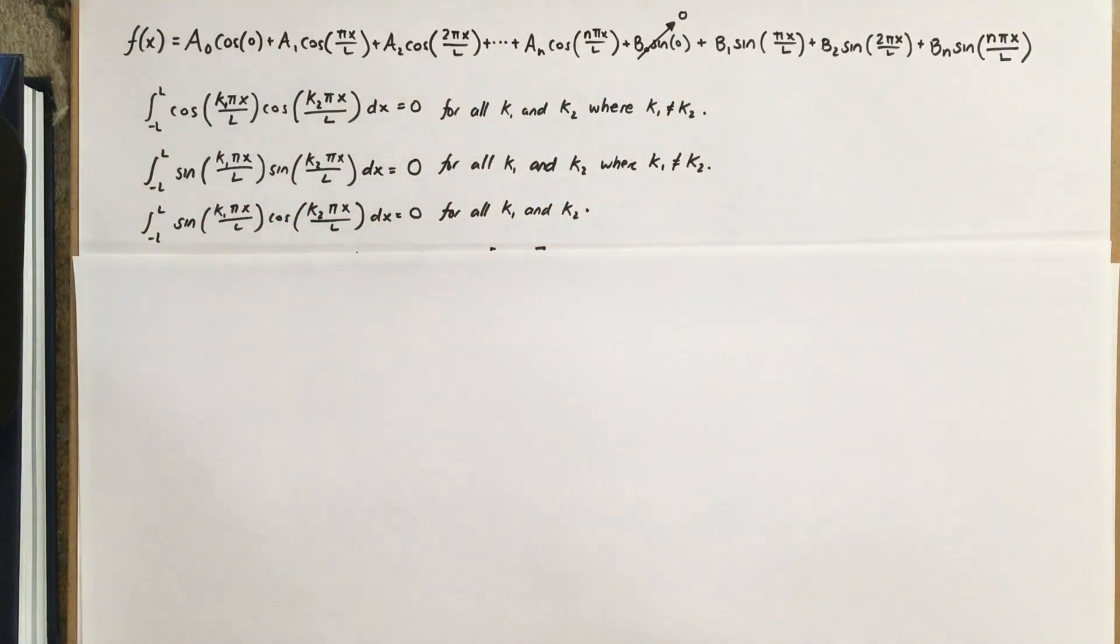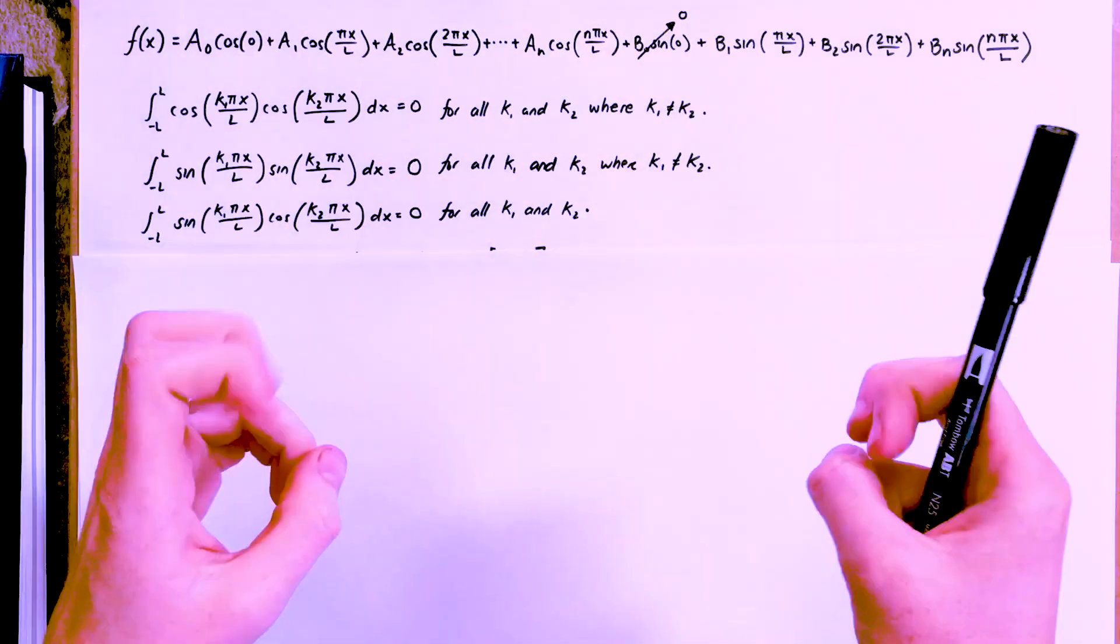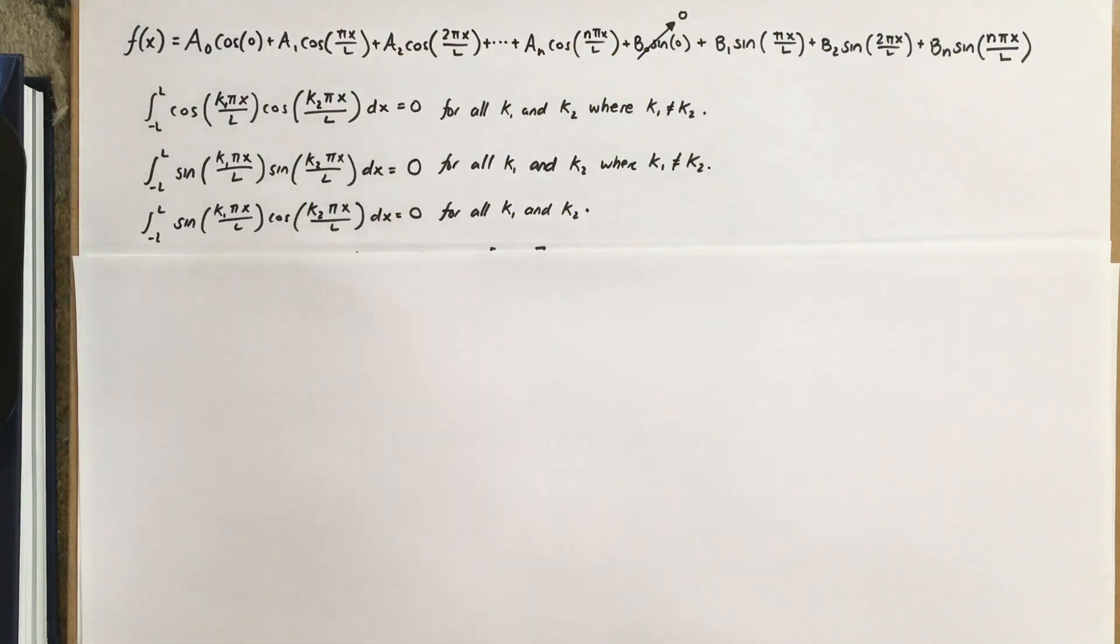But why does that matter? Well, this means that they'll form a 2n plus 1 dimensional basis for our vector space of functions. If we have a function f of x of infinite dimensions, and an orthogonal basis of 2n plus 1 dimensions, and they're both in the same vector space of all continuous functions on the domain negative L to L, then we can project f of x onto that basis to get an approximation of it.